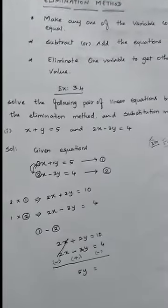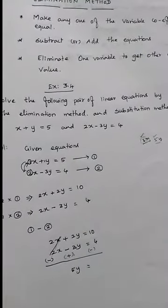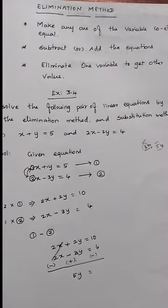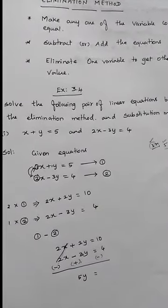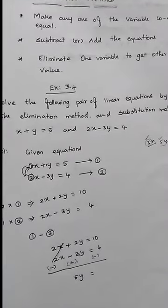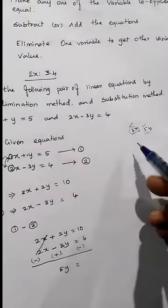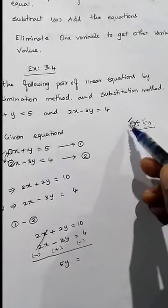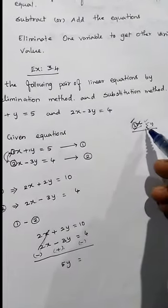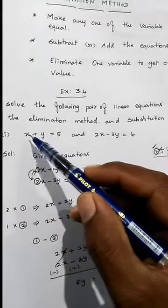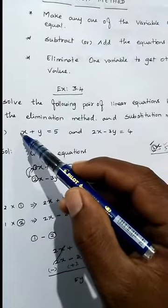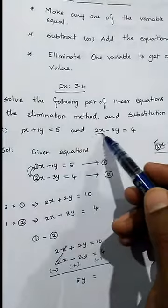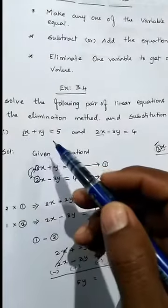We have Exercise 3.4, question number one: solve the following pair of linear equations by the elimination method and substitution method. We have to solve using both methods. Since we already know the substitution method, let's learn the elimination method. First, let's recall what is meant by coefficient. For example, in 3x and 5y, the coefficient of x is 3 and the coefficient of y is 5. In the given equations, the coefficient of x is 1 and the coefficient of y is 1.